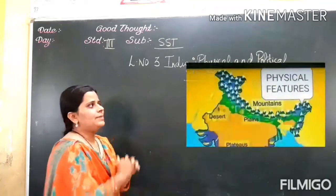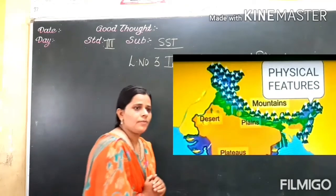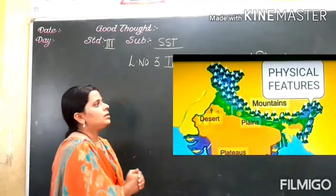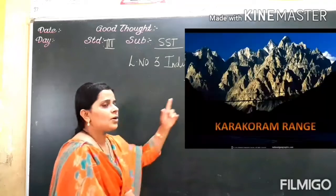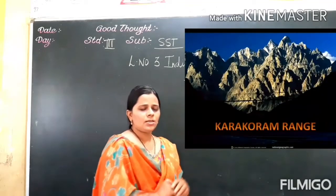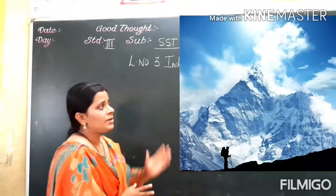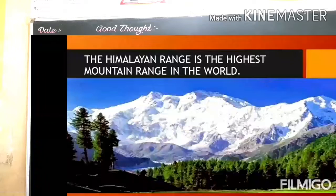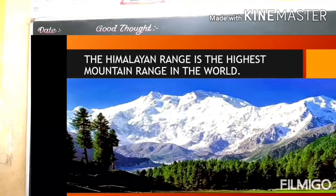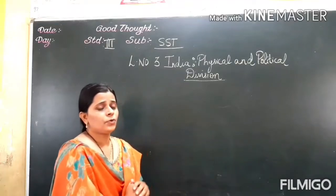The Northern Mountain is the 1st physical division of India. It includes the Himalaya and Karakoram range. Think that you have gone to the Northern Mountain — what does it include? It includes the Himalaya and Karakoram range. The Himalaya range is the highest range in the world. It is stretched from Kashmir to Arunachal Pradesh in the East.